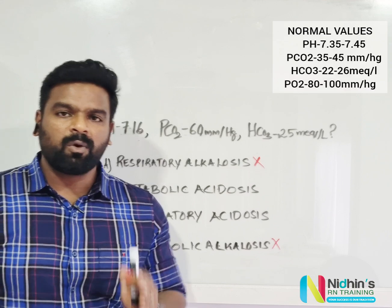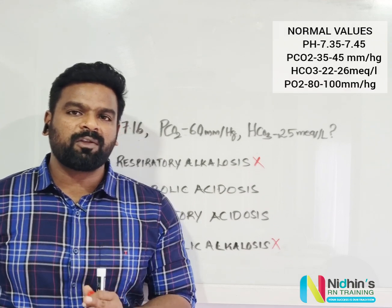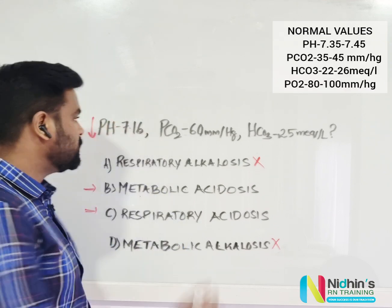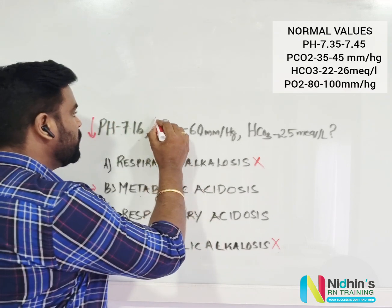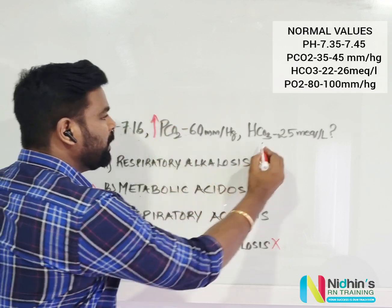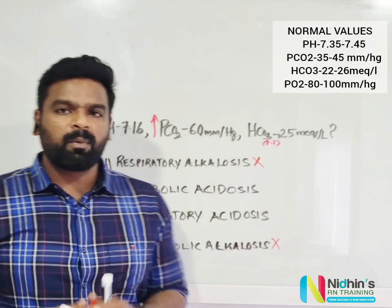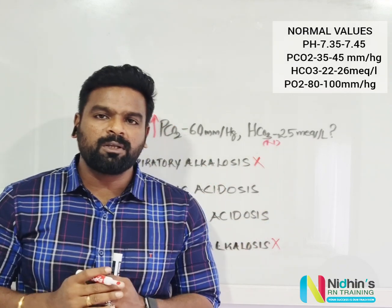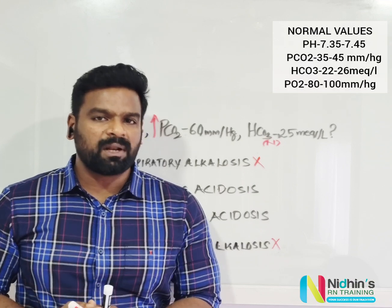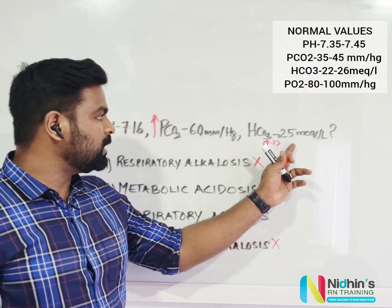Now looking at pCO2 — the normal pCO2 is 35 to 45 mmHg, so pCO2 is very high here. And bicarbonate is 25, which is within the normal range of 22 to 26 mEq per liter, so bicarbonate is normal.